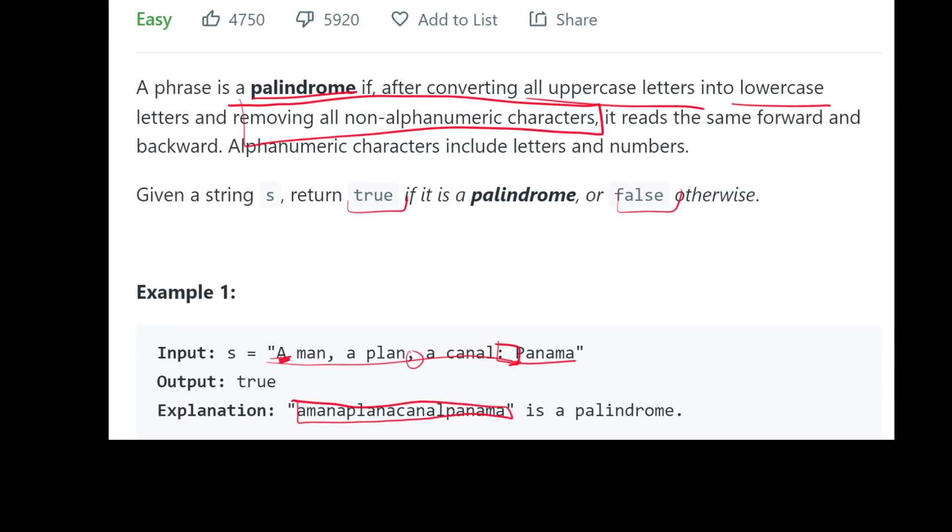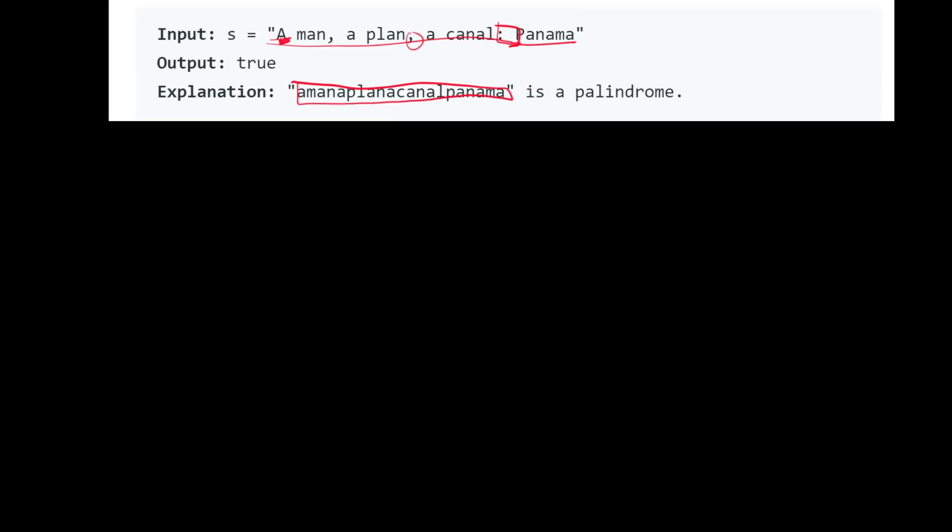So a naive solution is just going to be to set a temporary variable equal to the reverse of the string, so s reversed, and then we will just check if the temporary is going to be equal to s, and we can just return that.